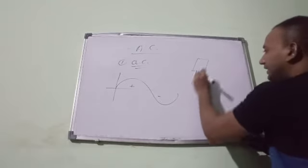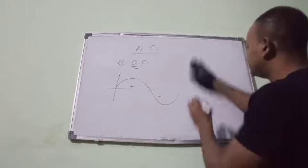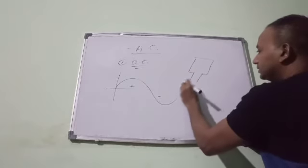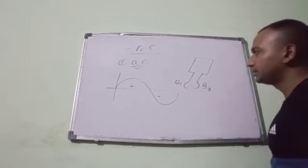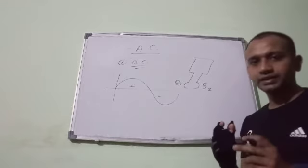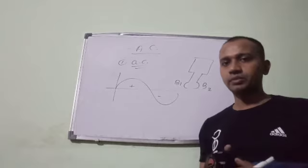We are having an AC generator and say these are the brushes B1, B2. So in class 10 we have studied what is AC generator. The generator in which the current changes direction after every half cycle is called AC generator.